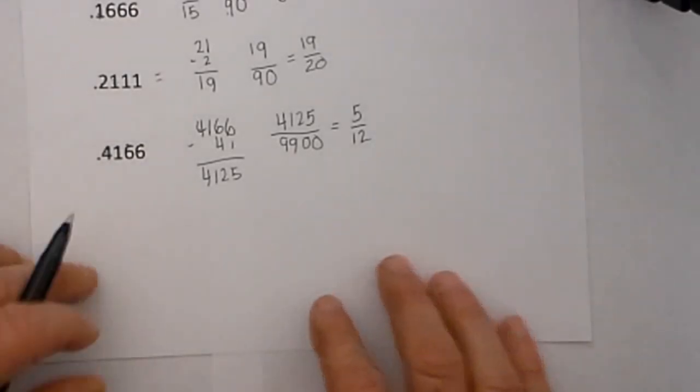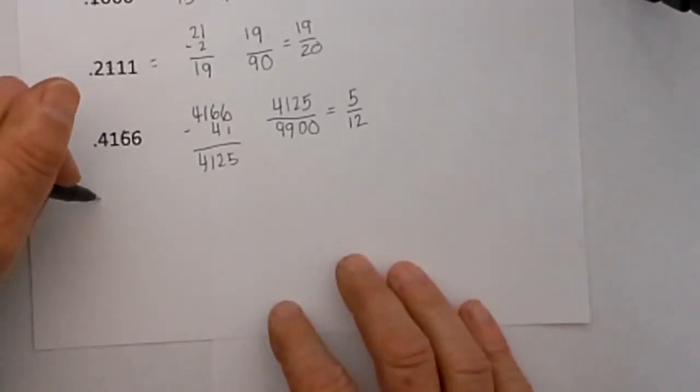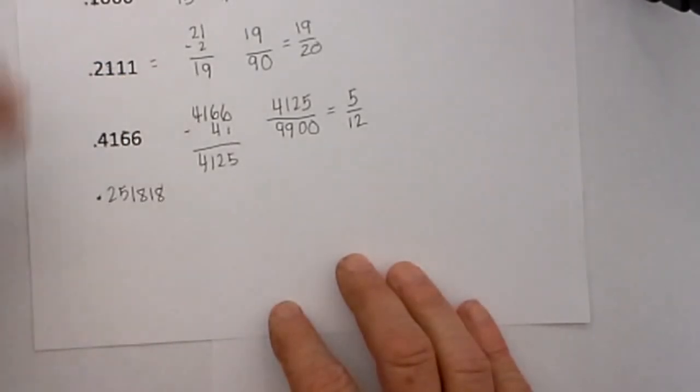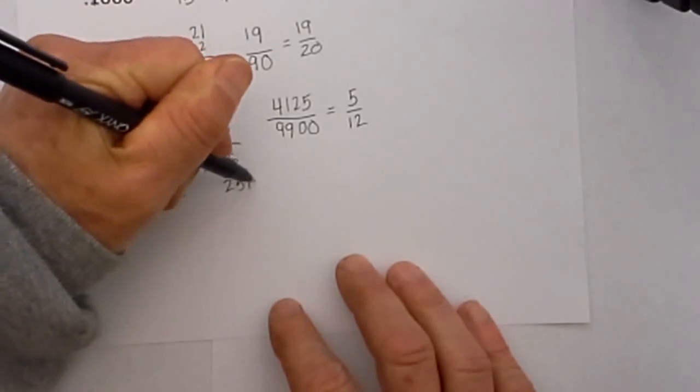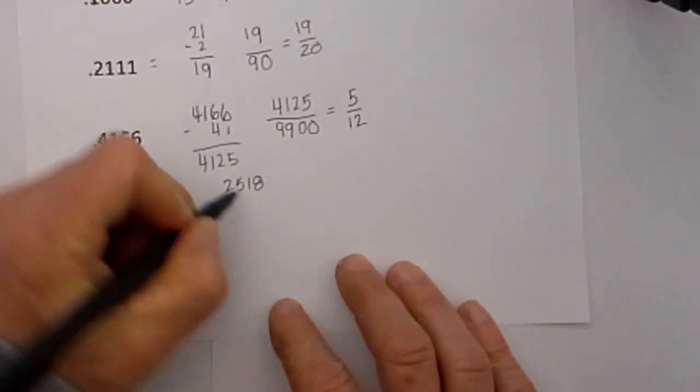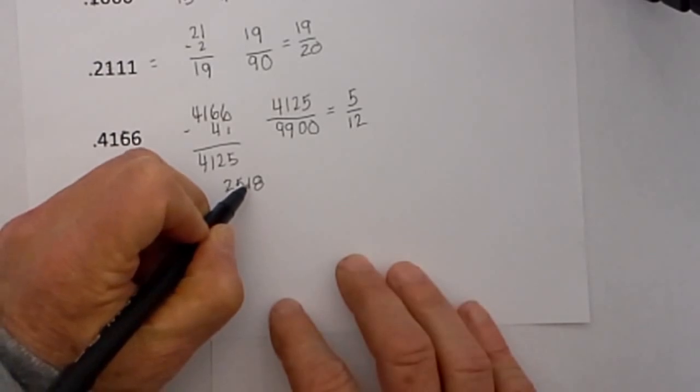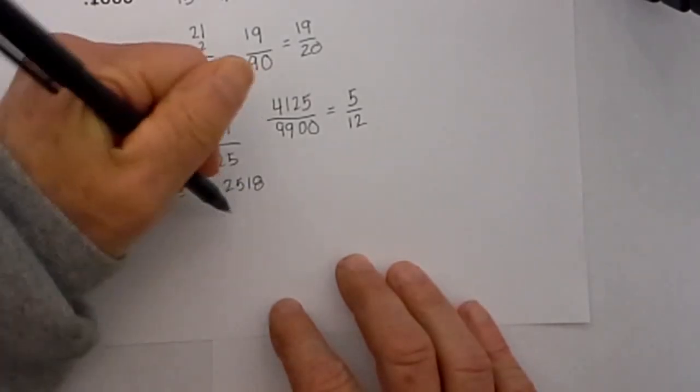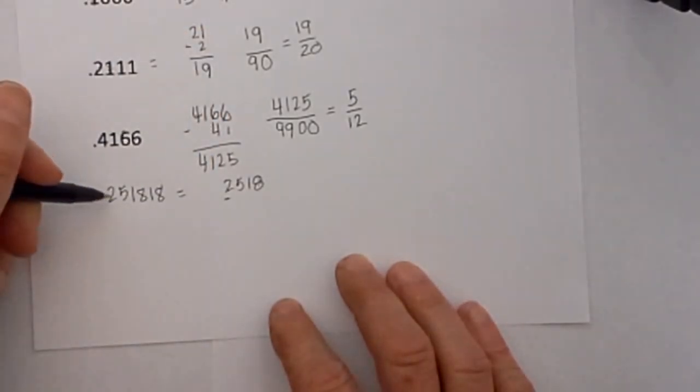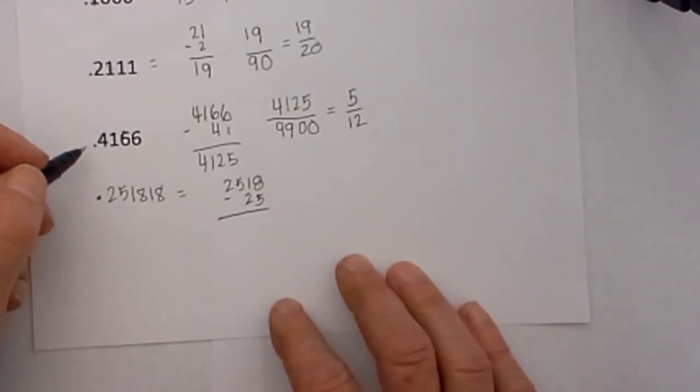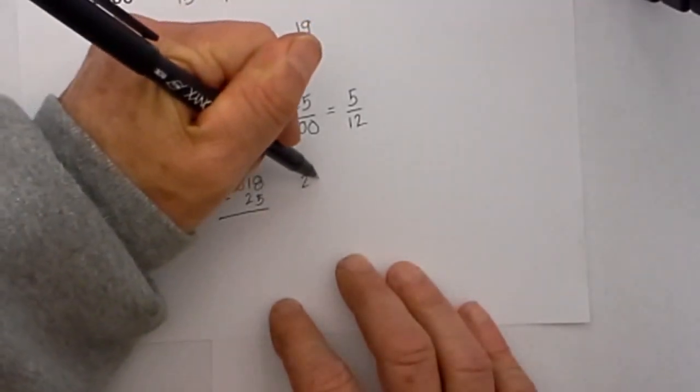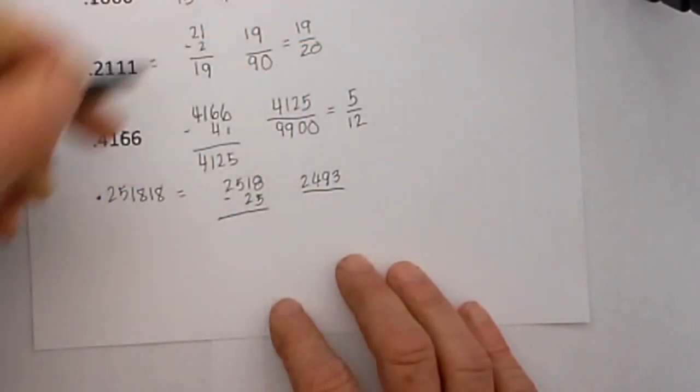Let me go through two more just to show you how this does work. Say for instance you have .251818 repeating, to convert this to a fraction it works. You take the repeating fraction which is 2518 and remember our rule you have two non-repeating and this one gives you two repeating so your repeating fraction minus 25 because that is the non-repeating portion.